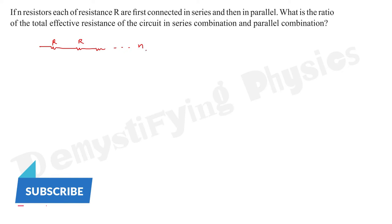These are n resistors. Now what is the effective resistance in series? We know we add the resistors: R plus R plus R... we'll do it n times. So what is the net resistance? It is nR.